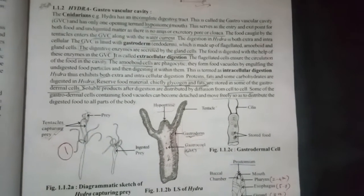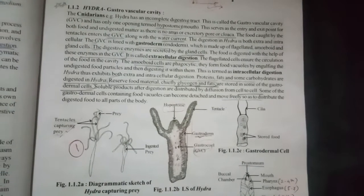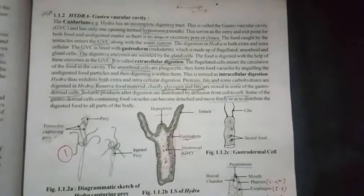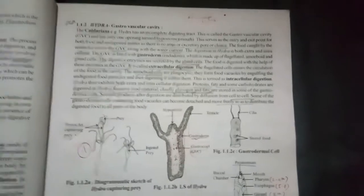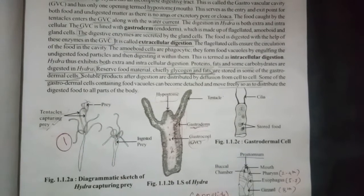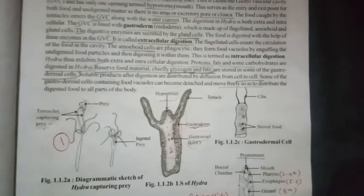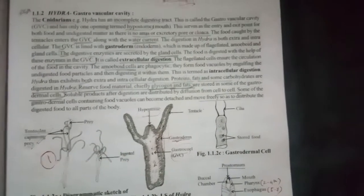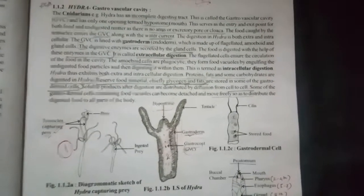These are some points that you have to remember. They can store carbohydrate in the form of glycogen, they can store fat also. And the cells of GVC gastroderm may get detached and provide the nutrition and the digested material will get diffused from cell to cell. These are some important points that you have to remember.